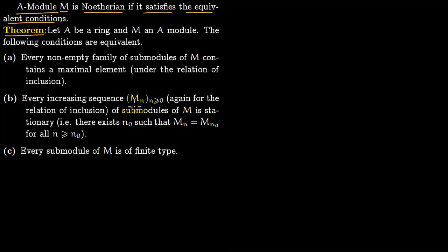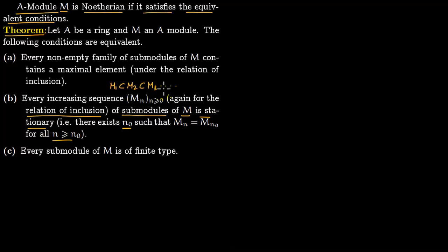Condition B: every increasing sequence — just like in rings — so say you have M₁ ⊆ M₂ ⊆ M₃ ⊆ …, written as M_n for n ≥ 0, under the relation of inclusion, where all the M_n are submodules of M — this sequence becomes stationary. That is, there is some N₀ such that M_n = M_{N₀} for all n ≥ N₀. Once it hits M_{N₀}, everything after that is the same, precisely as we saw for Noetherian rings.